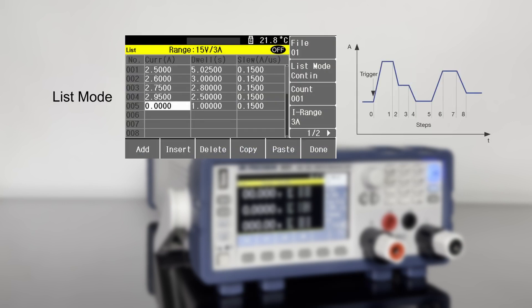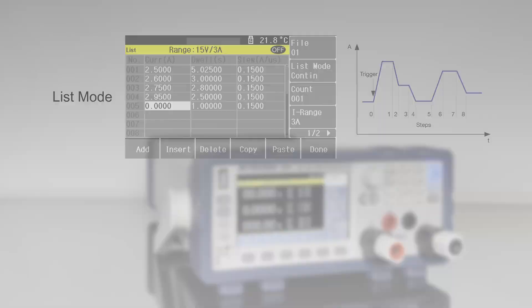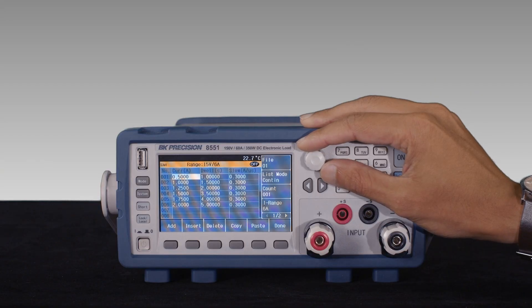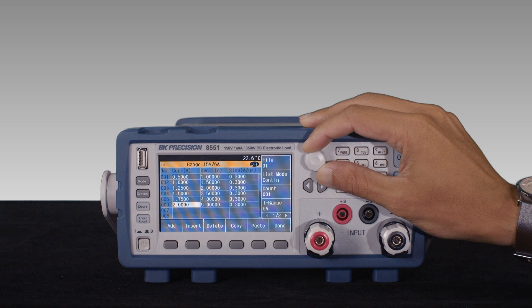List mode can be used to generate precise load sequences and is configurable from the front panel. Set load current, dwell time, and slew rate for up to 100 programmable steps.